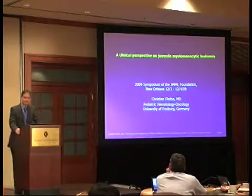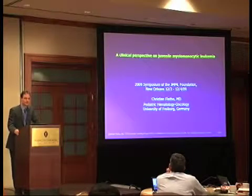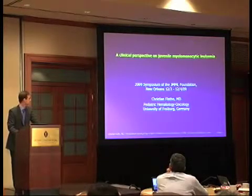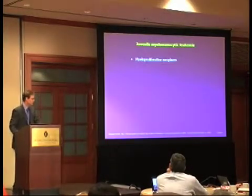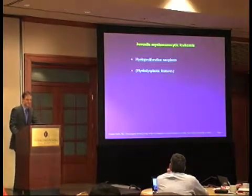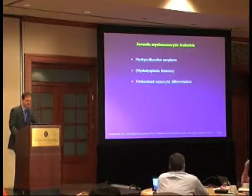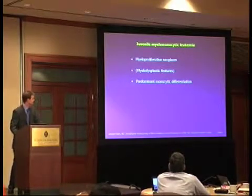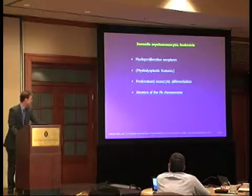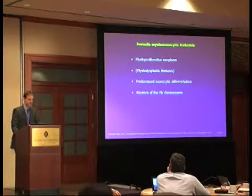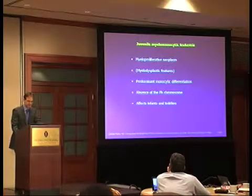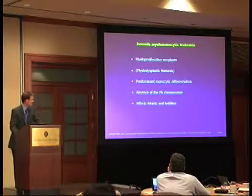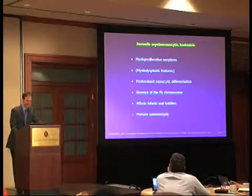I have been asked to give a brief 10-minute overview on the clinical perspective on JMML. JMML is a myeloproliferative neoplasm that may or may not have myelodysplastic features. It has predominant monocytic differentiation — that's where the name comes from. It is defined, among other things, by the absence of the Philadelphia chromosome or the BCR-ABL gene fusion, and there is a strong age predilection in that it affects infants and toddlers.